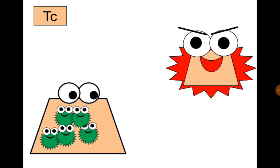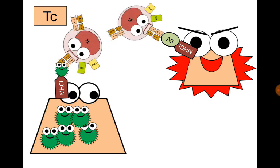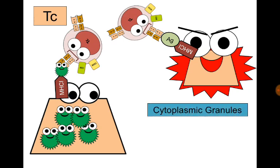For T-cytotoxic cells, the stimulant is an abnormal cell — either a viral-infected cell or a tumor cell. The cell shows viral antigens or tumor antigens on its surface attached to MHC class 1 molecules. A specific T-cytotoxic cell then attaches to this MHC-antigen complex and produces cytoplasmic granules, including granzymes — enzymes that destroy the cell's DNA — and perforins.